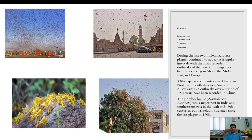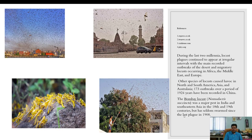During the last two millennia, locust plagues have continued to appear at irregular intervals, with major recorded outbreaks of desert and migratory locusts occurring in Africa, the Middle East, and Europe. Other species caused havoc in North and South Africa and Australia — 173 outbreaks over a period of 1,924 years have been recorded. The Bombay locust, Nomadacris, was a major pest in India and southwest Asia, with large plagues observed in 1908.